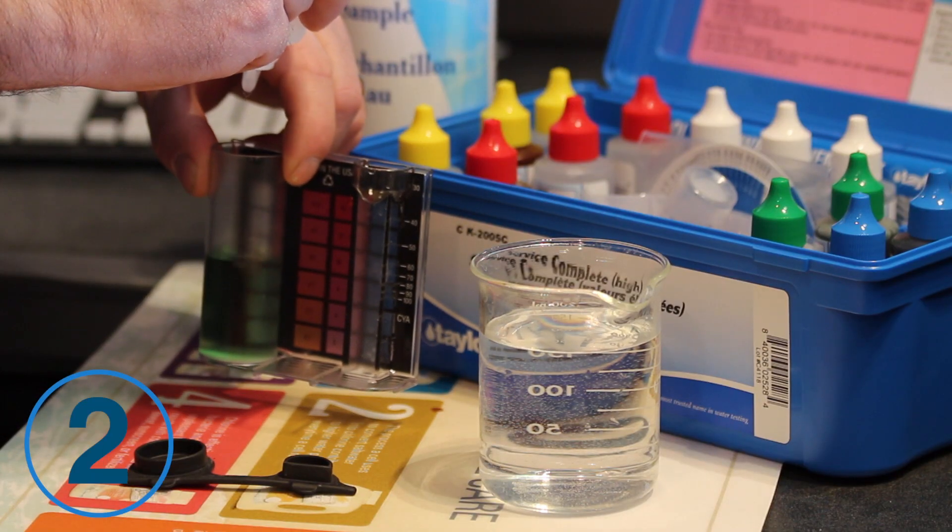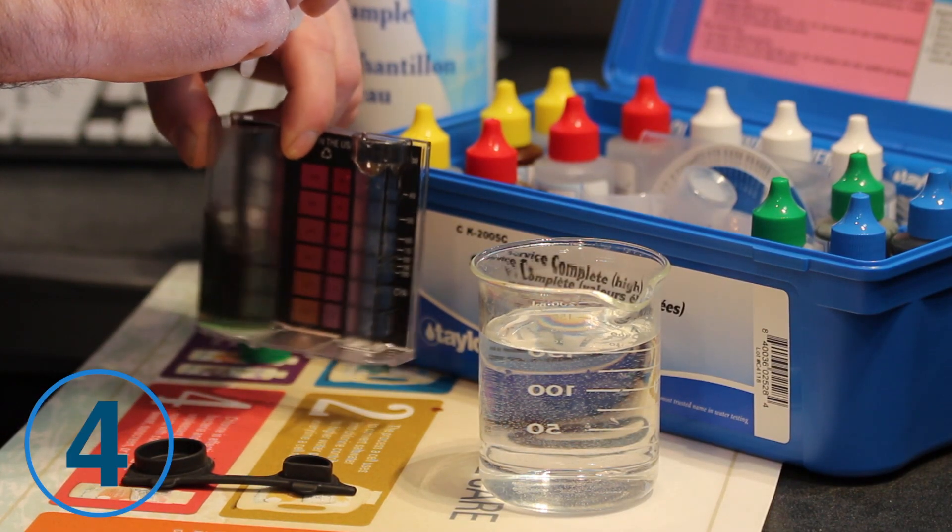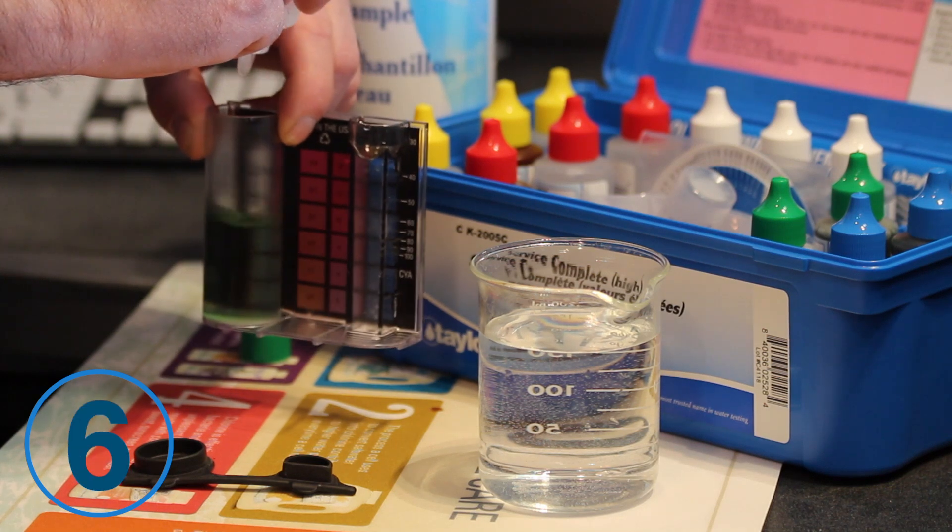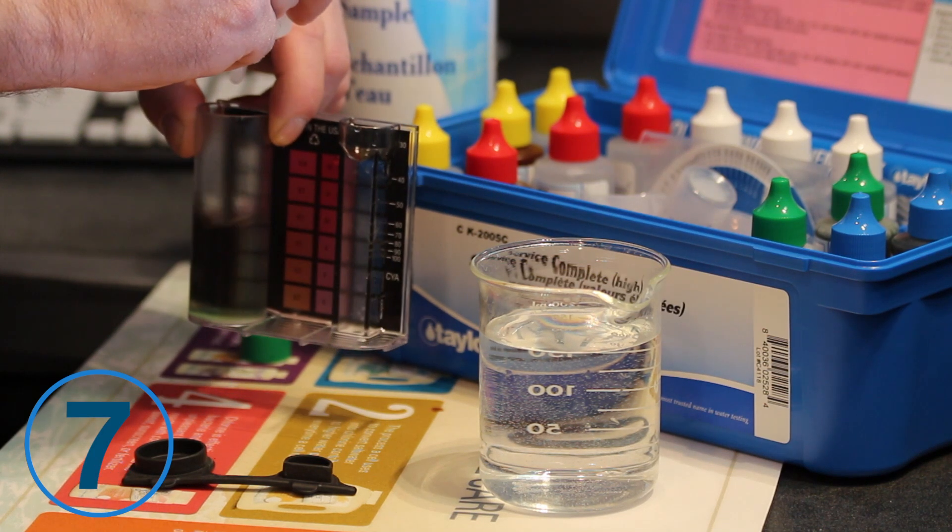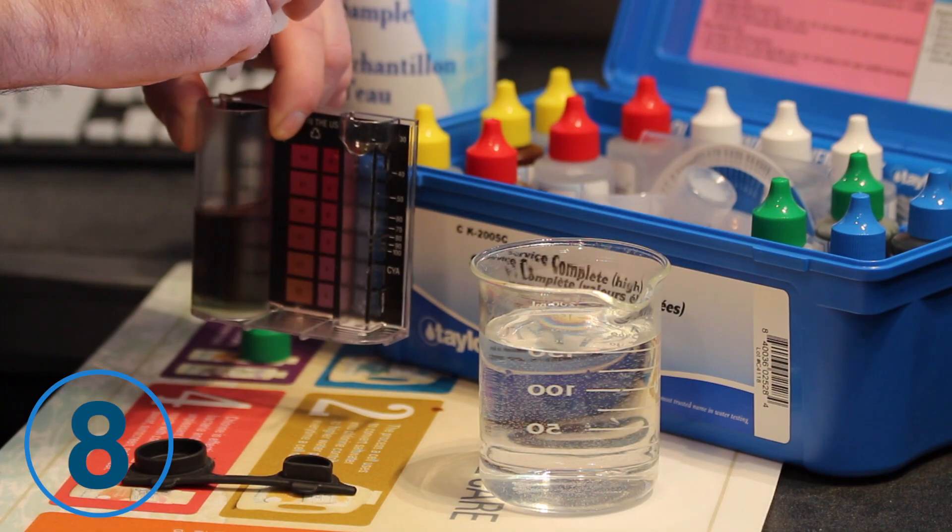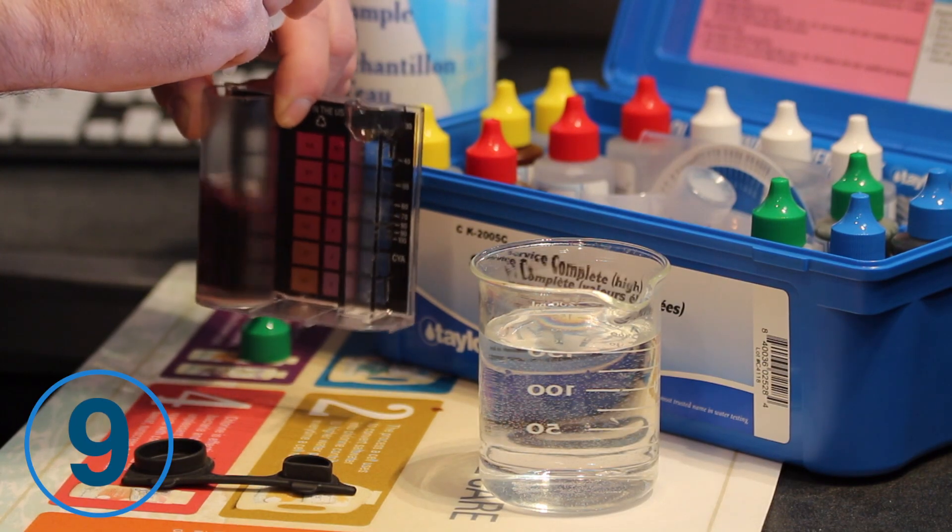Now start adding reagent number 9, counting each drop. Stop when the water has turned from green to red. Then add 1 more drop to make sure the color doesn't change.